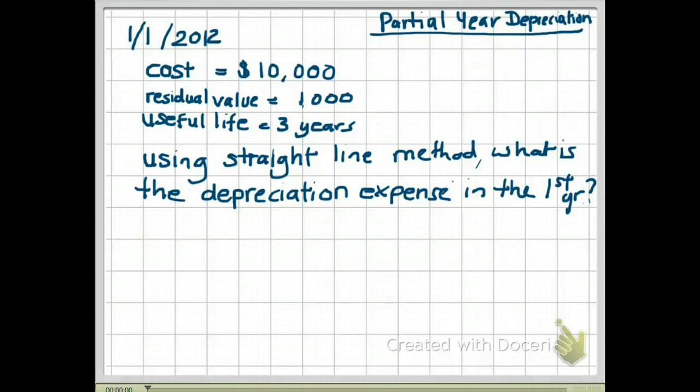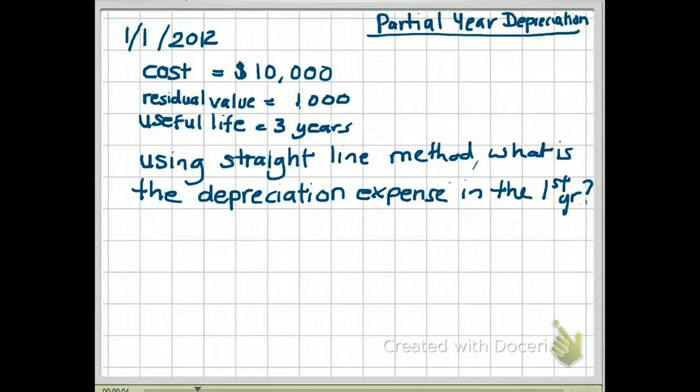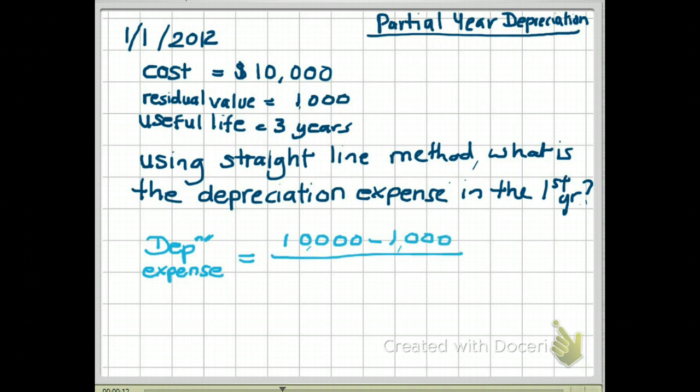For this example, on the 1st of January 2012, we purchased an asset at a cost of $10,000. The residual value is $1,000, and the asset's useful life is 3 years. Using straight line method, what is the depreciation expense in the first year? You know that your depreciation expense is equal to cost minus residual value divided by estimated useful life in years. So $10,000 minus $1,000 divided by 3, which gives you $3,000 of depreciation every year.